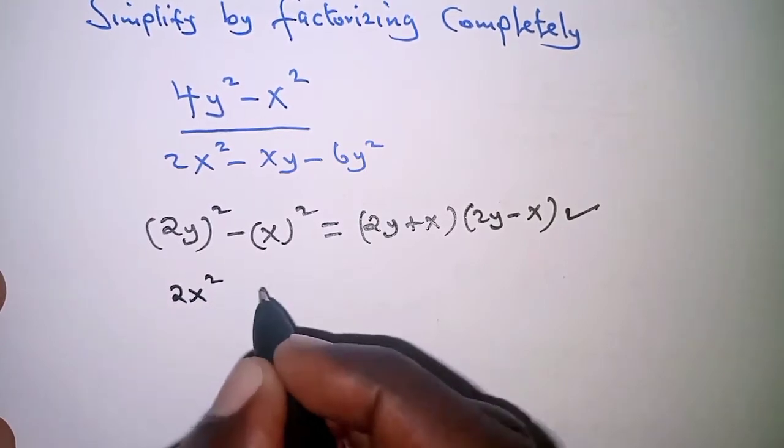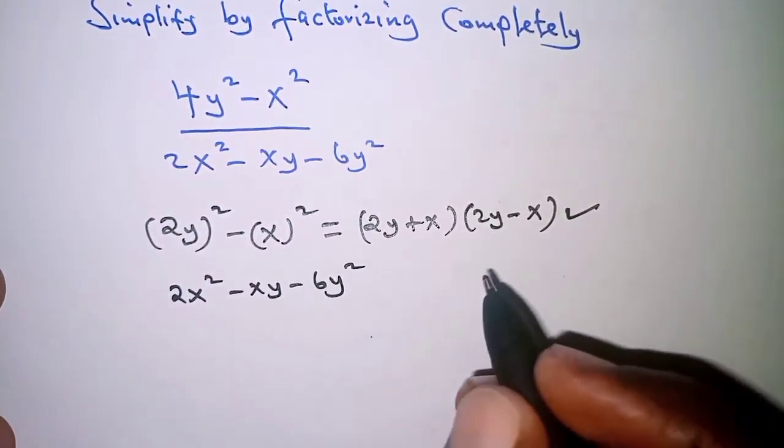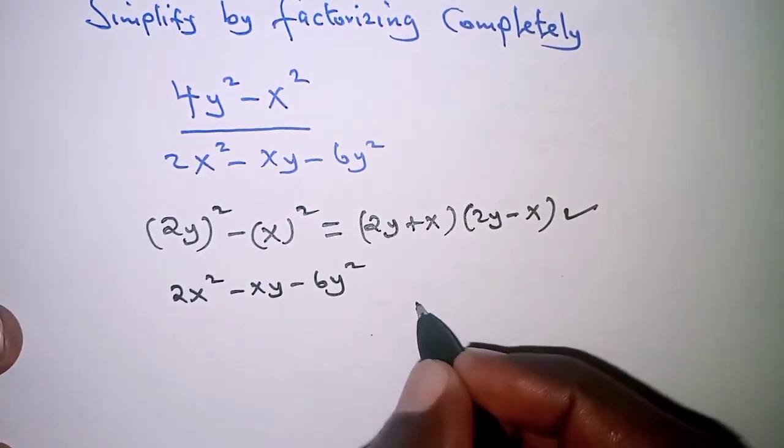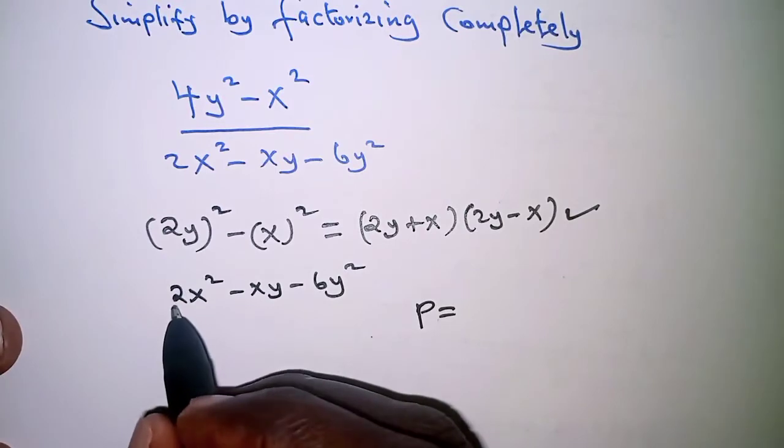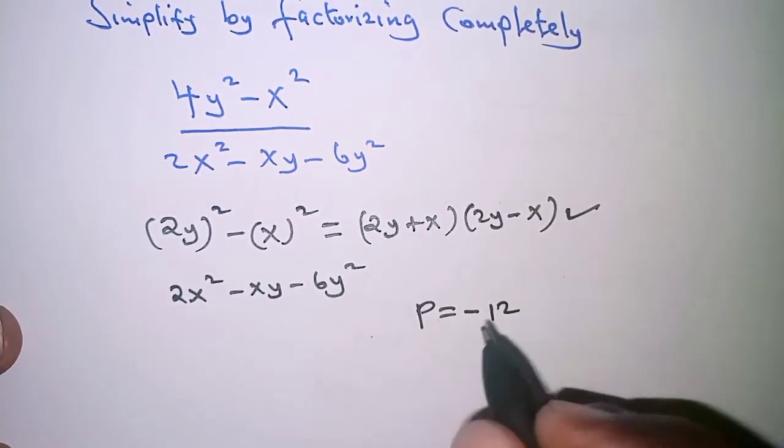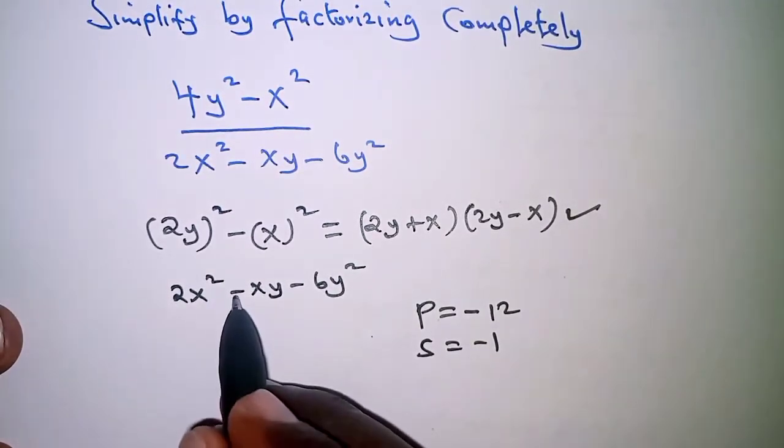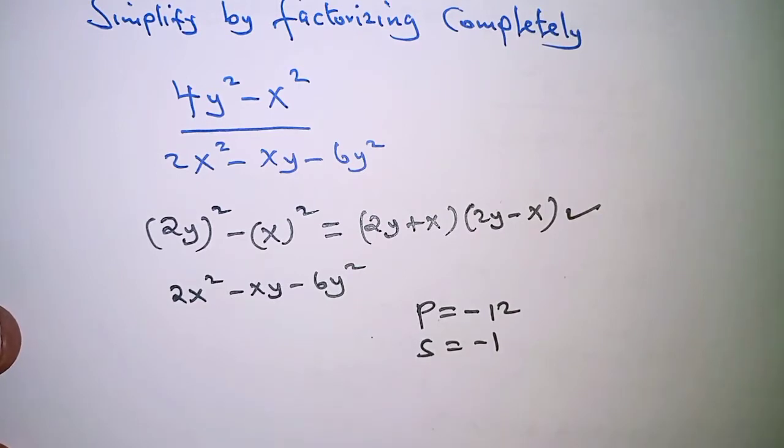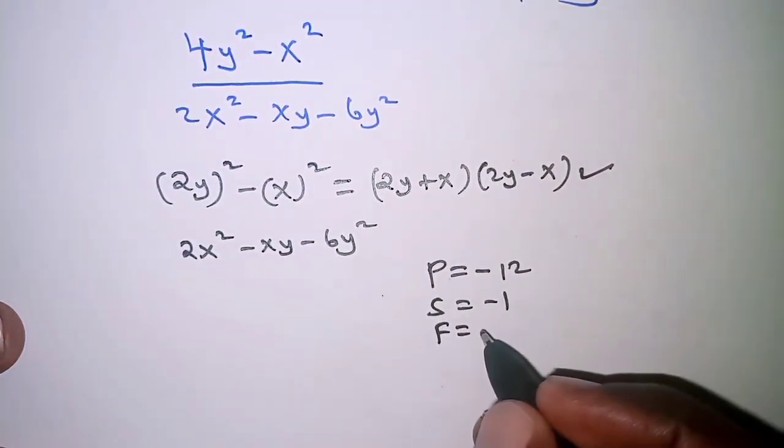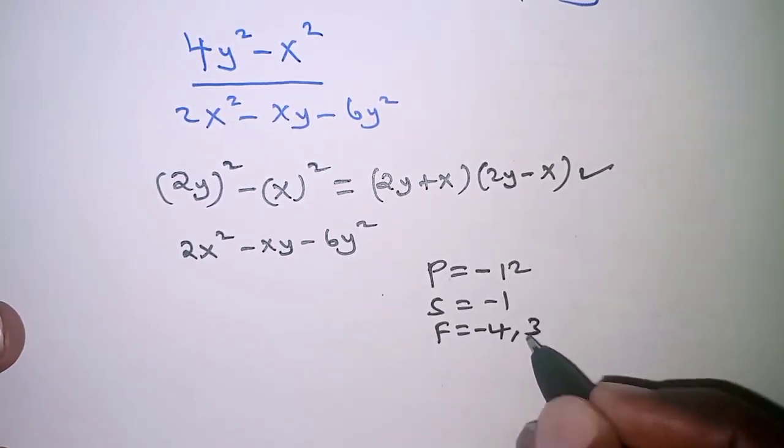For 2x² - xy - 6y², we look for two factors whose product is 2 × (-6) = -12, and whose sum is -1, which is the coefficient of the xy term. From this we can see that the factors are -4 and 3.